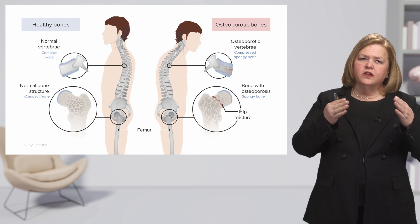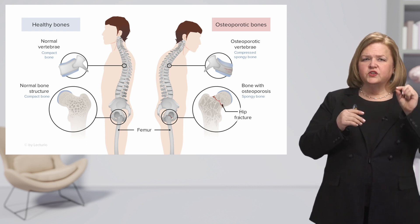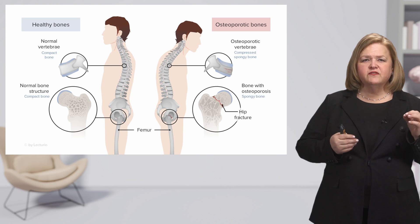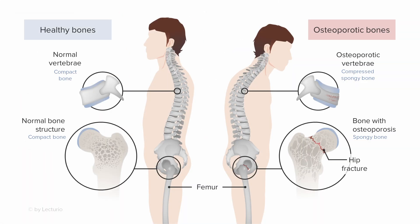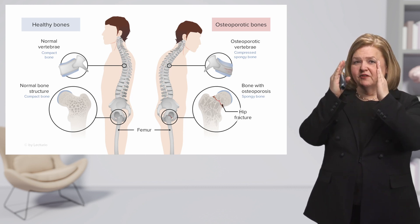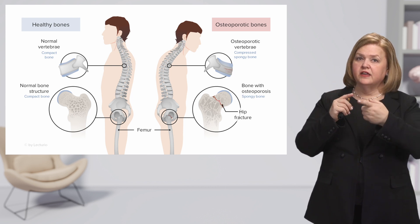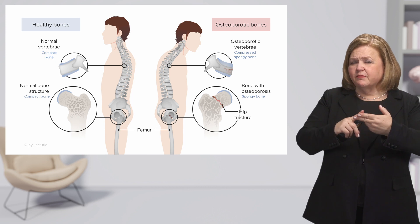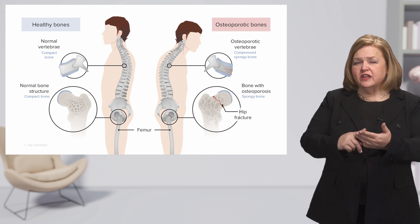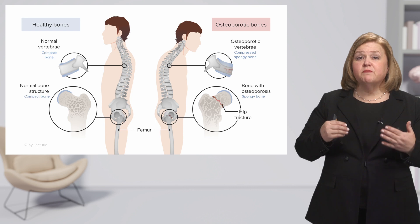Let's look at a normal vertebra first — healthy bones. They have a normal curvature. They look strong and firm, and you have normal bone structure. Look at that femur — nice and dense. The cues I'm going to be looking for are something different from normal. That's why it's so important in nursing school that you always know what normal is. When you see something different or abnormal, that tells you these are cues you should be recognizing. How can you analyze them to identify what might be wrong so you can collaborate with the patient and healthcare provider to get the best level of care?